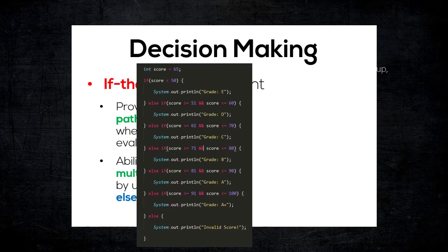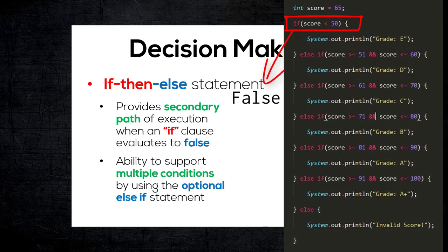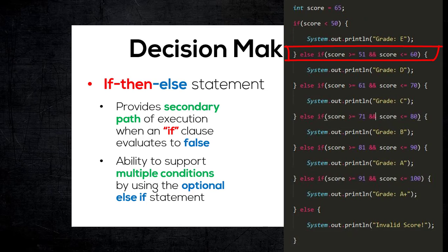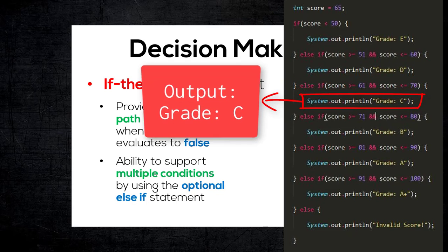Now let's take a look at this example, assuming the score variable is now having the value of 65. And since 65 is not less than 50, the first if condition will be evaluated as false, and the system will proceed with the second if condition. And since 65 is not in between 51 and 60, the second if condition will be evaluated as false too. However, in the third if condition it will be evaluated as true, and the statement within that particular then clause will be executed. After that, the rest of the else-if and else statements will be ignored.